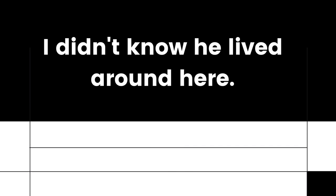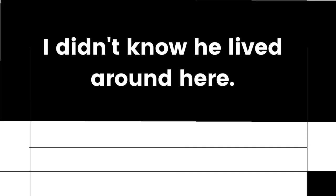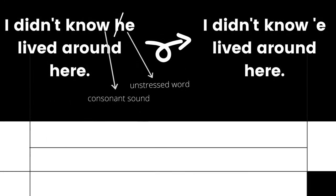Next sentence: 'I didn't know he lived around here.' Notice I did not say 'I didn't know he lived around here.' I said 'I didn't know he lived around here.' That is because 'he' is unstressed, and the word 'know' ends in a consonant sound. The W is kind of tricky because it's a semi-vowel — sometimes it acts as a consonant and sometimes as a vowel. In this case, it's acting as a consonant. So we say 'I didn't know he lived around here.'